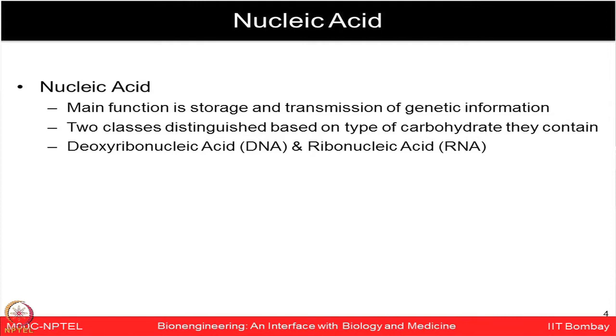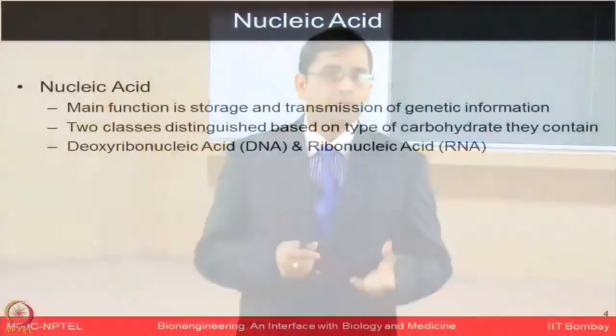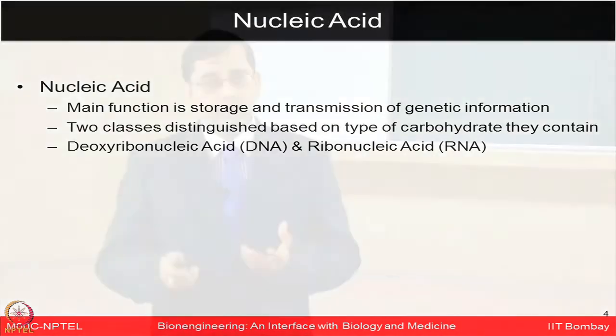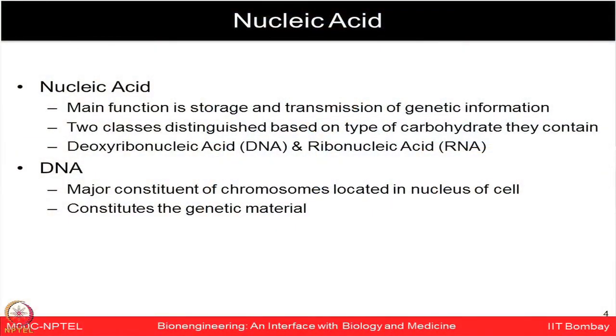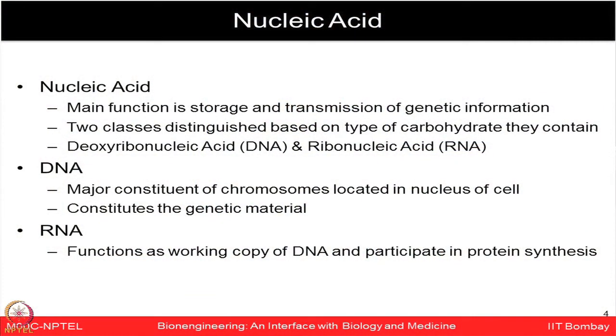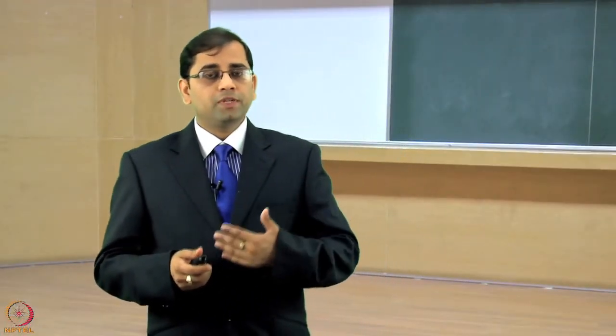The main function of nucleic acid is to store and transmit the entire genetic information. There are two specific classes based on sugars: DNA (deoxyribonucleic acid) and RNA (ribonucleic acid). DNA constitutes the genetic material located in the chromosomes of the nucleus, whereas RNA is the functional working copy of DNA that participates in protein synthesis. From DNA to RNA, the process of transcription happens, and then from RNA to protein, the process of translation happens.